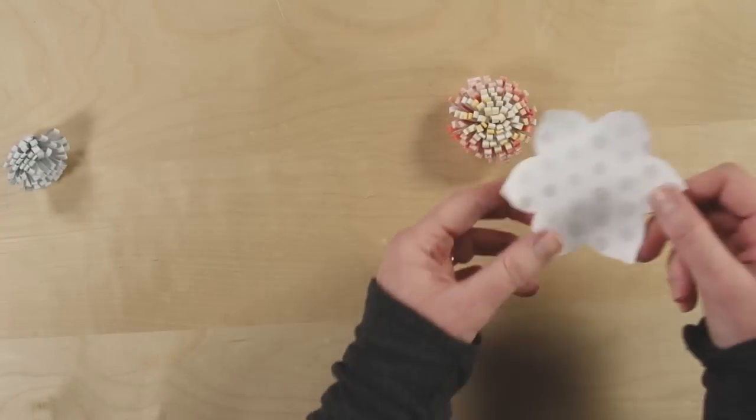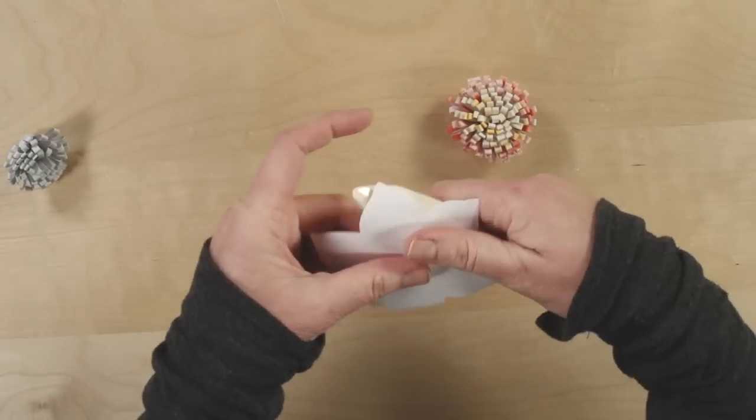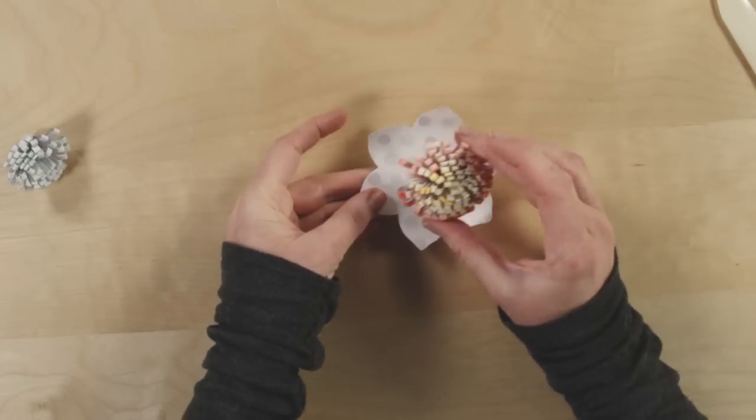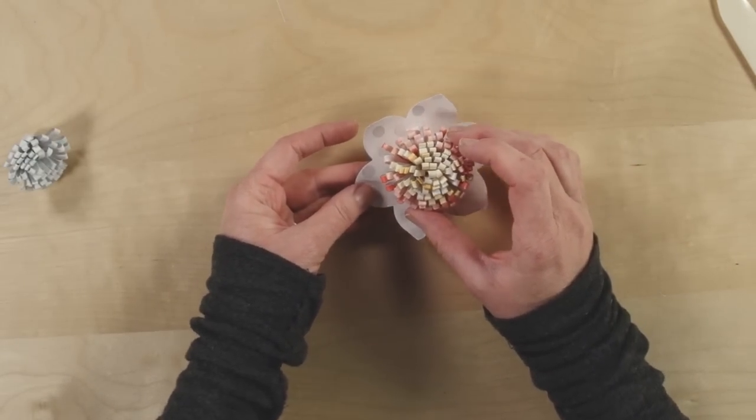These die-cut flowers are fun too. You just take a bone folder and curl up the edges and then you can stick these right to the center to make an even larger flower for your wreath.